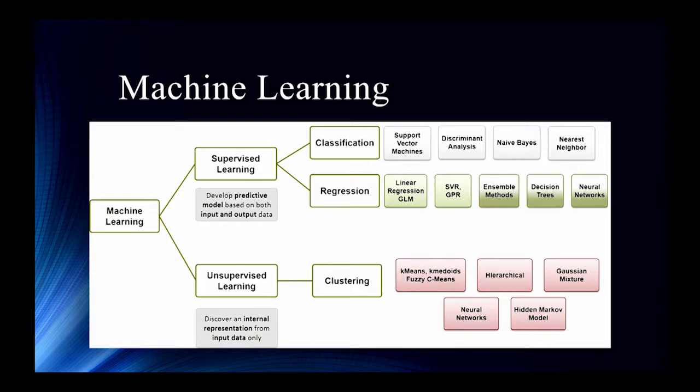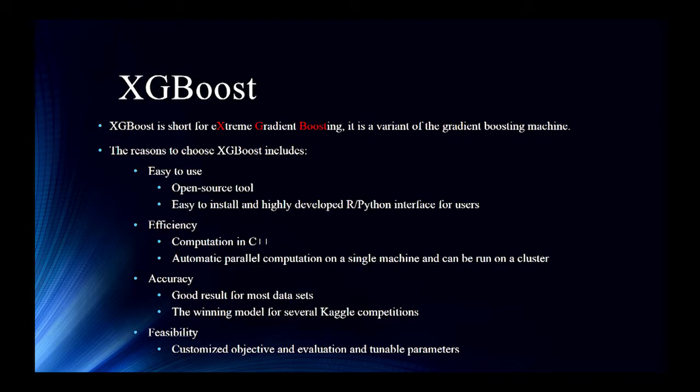So there are many algorithms for supervised and unsupervised learning. For classification, we have support vector machine, discriminant analysis, naive Bayes, nearest neighbors. For regression, we have linear regression, generalized linear model, ensemble method, decision trees. For clustering, we have k-means hierarchy, neural network, and hidden Markov models. So for this project, the problem was introduced by Brandon Hall, and the benchmark model he used was support vector machine. The support vector machine is a model which is widely used in the machine learning field.